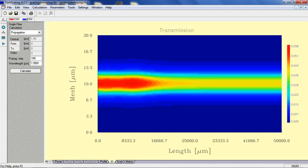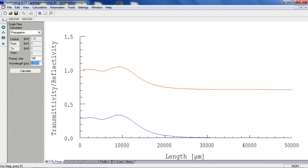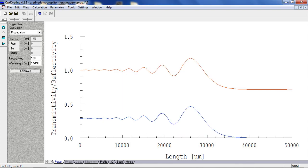But at the shorter wavelength of 1.5499, the light goes much deeper into the grating. This is the physical origin of the differential delay with wavelengths.